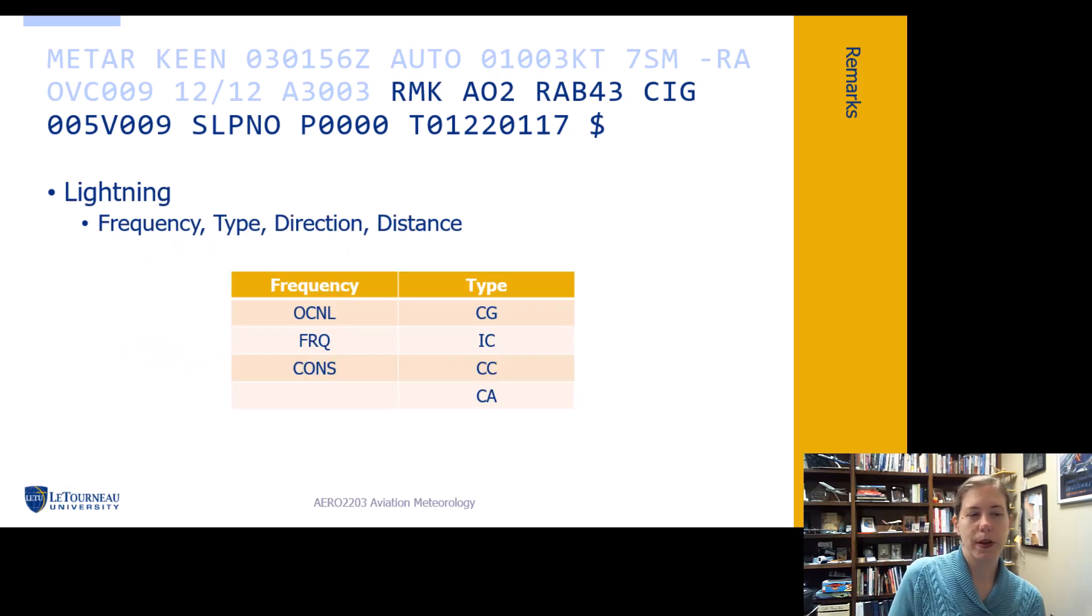Lightning, I love the lightning group, so fun. So we get several things with this. We get the frequency of the lightning's occurrence. We get what type of lightning. We get a direction and we get a distance if it's farther than within five miles. So if it's vicinity it's five to ten, remember. And if it's distant it's more than ten miles away that it was observed. So for this example we have occasional, these you can usually figure out just by looking. Frequent and CONS is constant, so it's like a strobe light in here with the constant lightning going on.